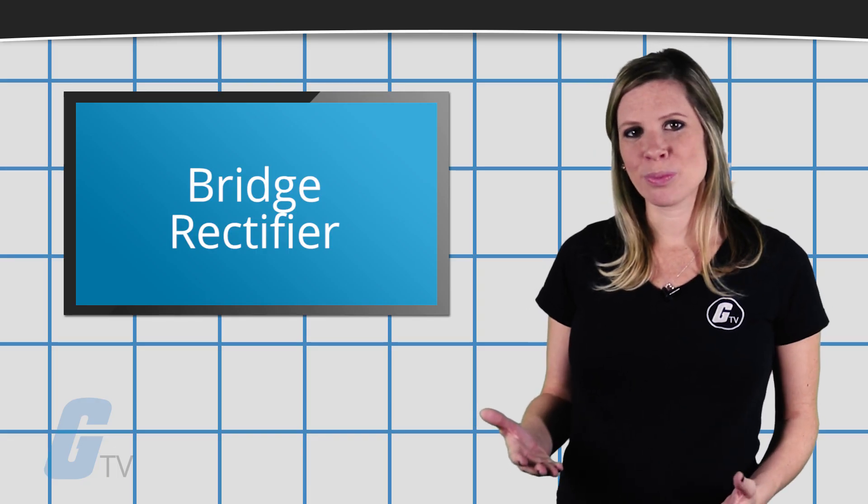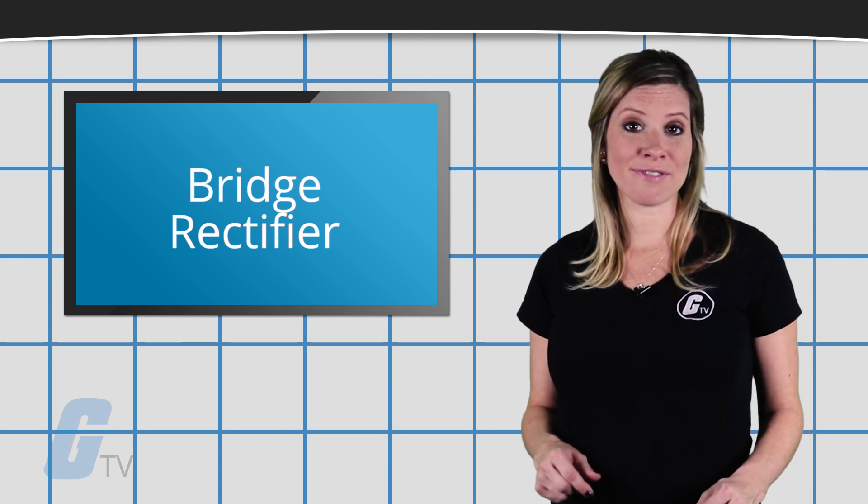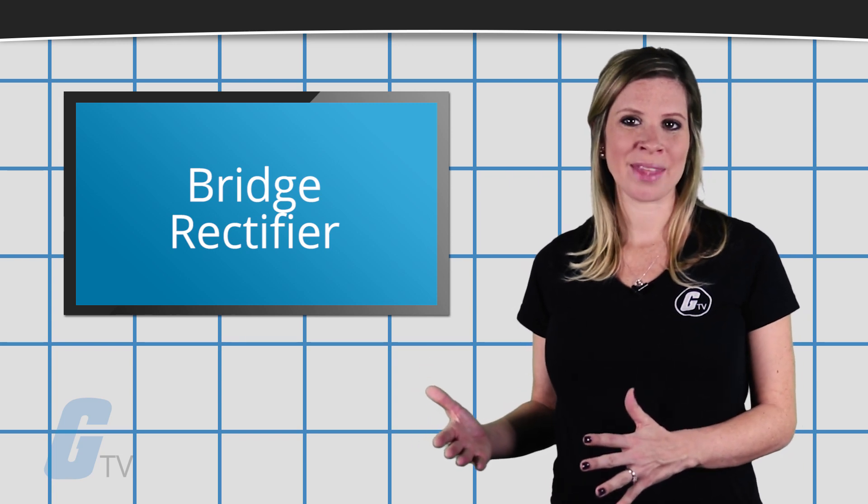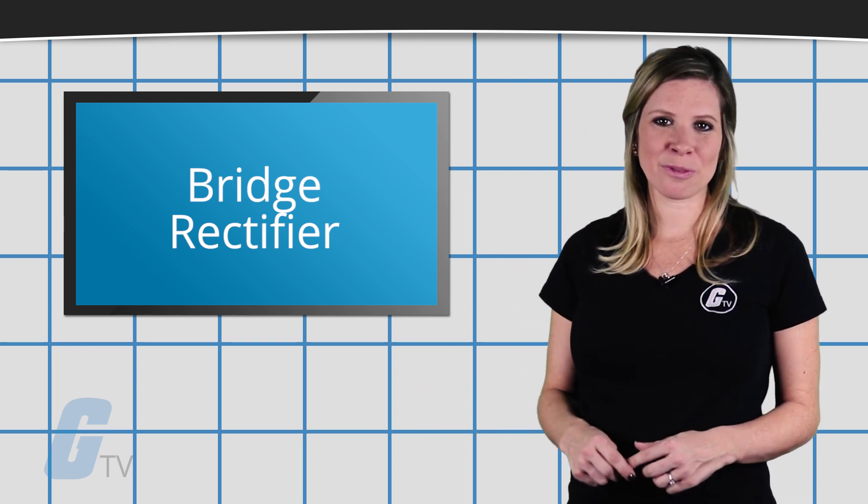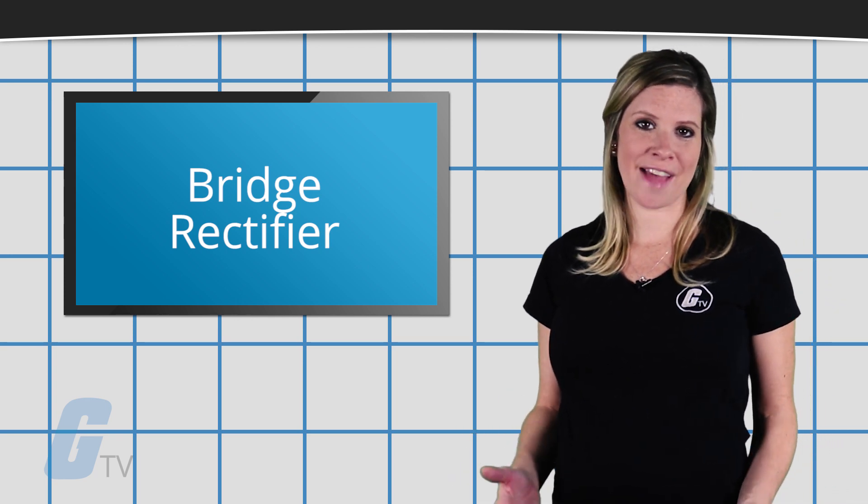One advantage of bridge rectifiers is that the rectification efficiency of full wave rectifier is twice as much as a half wave rectifier. They also have a higher output voltage, higher output power, and higher transformer utilization factor.